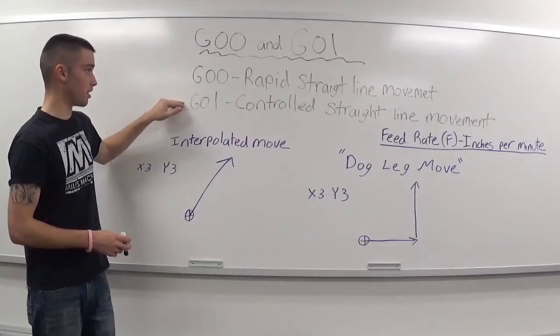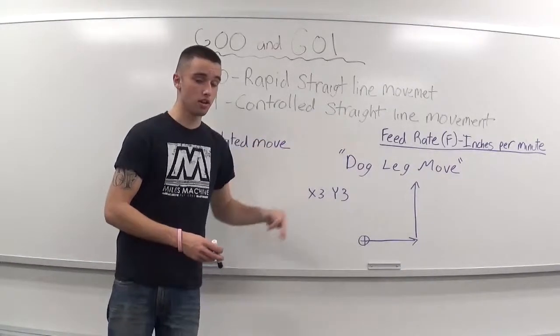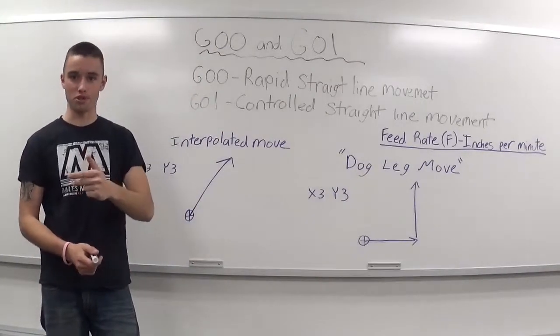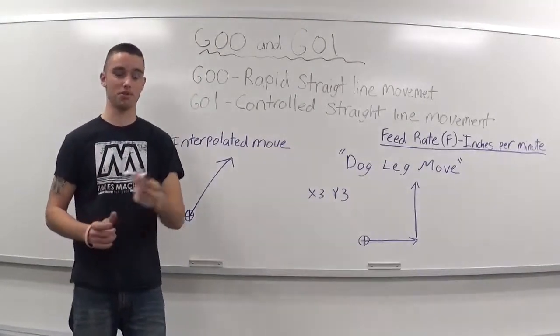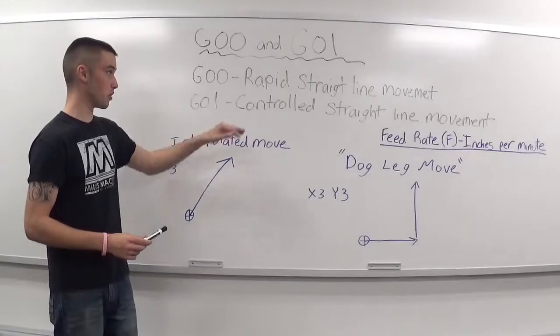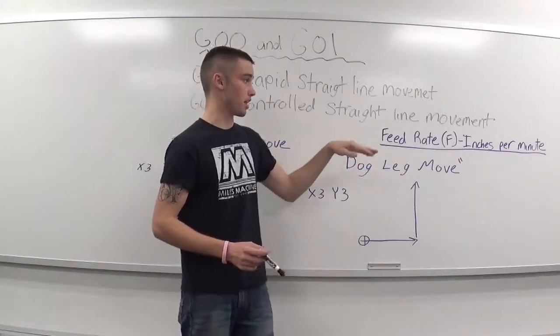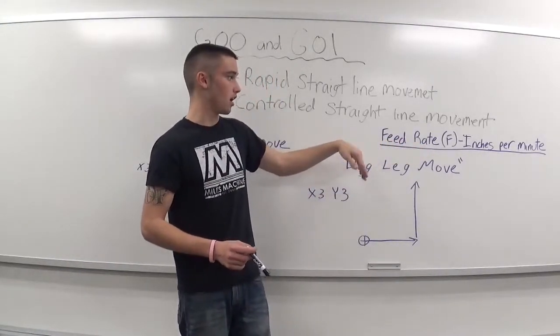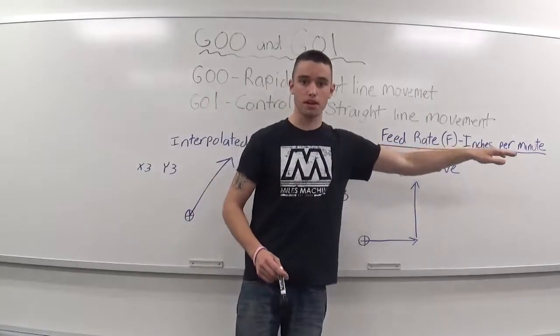You have a G01, which is a controlled straight line movement. You use G01 when you're milling, drilling, tapping, doing anything with the actual workpiece. You control the G01 with the feed rate, which is called out with an F in the program. And you measure feed rate in inches per minute.